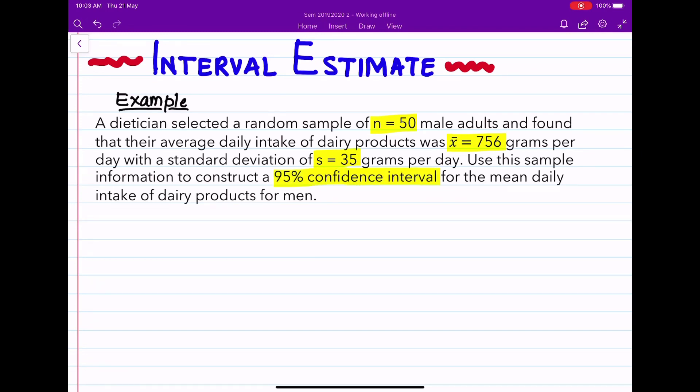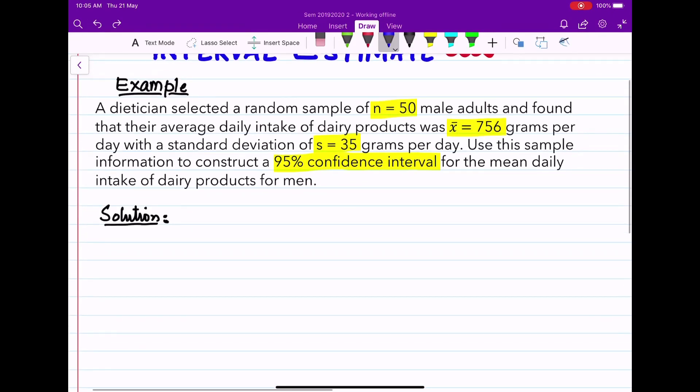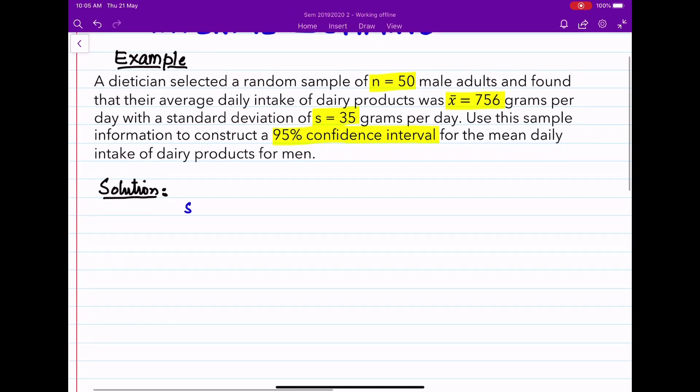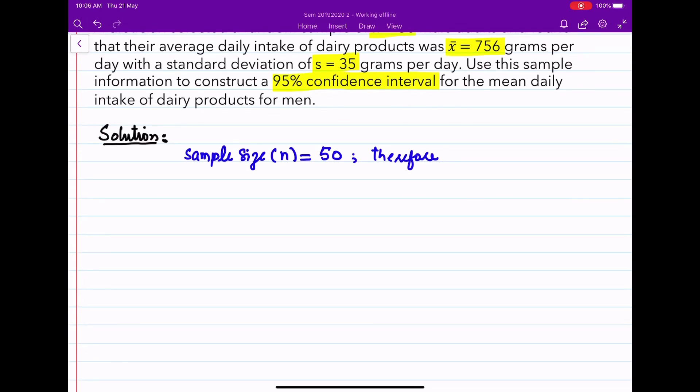For the mean daily intake of dairy products for men. We know that our sample size here is 50, n equals 50, which means that we can safely assume that the x bar or sample mean